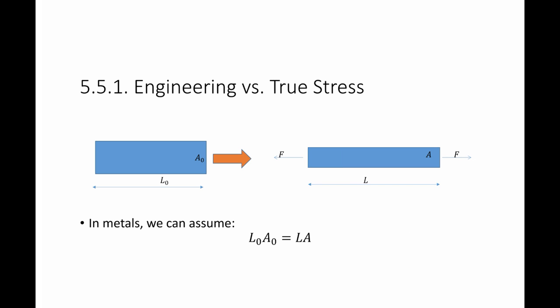In metals under large deformations, we can assume that the volume stays the same as the material deforms: L₀ multiplied by A₀ is equal to L multiplied by A. Using this relationship, I can relate all the previous stress and strain measures.